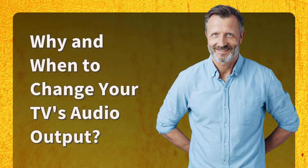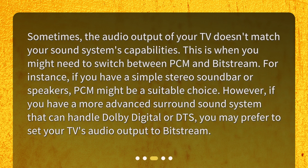Why and when to change your TV's audio output? Sometimes the audio output of your TV doesn't match your sound system's capabilities. This is when you might need to switch between PCM and Bitstream. For instance, if you have a simple stereo soundbar or speakers, PCM might be a suitable choice. However, if you have a more advanced surround sound system that can handle Dolby Digital or DTS, you may prefer to set your TV's audio output to Bitstream.